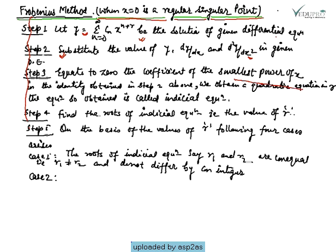From the identity obtained in step two, we equate the coefficient of the smallest power of x to zero and obtain a quadratic equation. This equation is called the indicial equation. We then find the roots of the indicial equation and denote them by the symbol r.